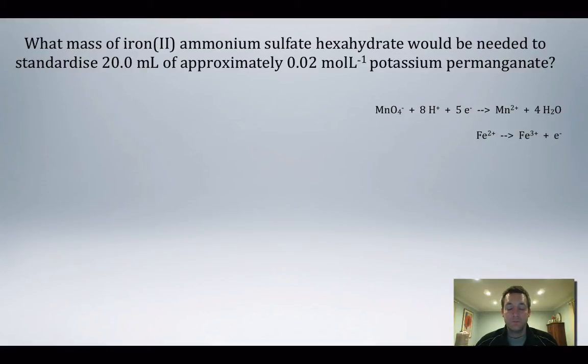First, this iron(II) ammonium sulfate hexahydrate—we're going to need to know its formula for this question. That is Fe(NH₄)₂(SO₄)₂·6H₂O. That's its formula, and that's going to be important when we're trying to find its mass.